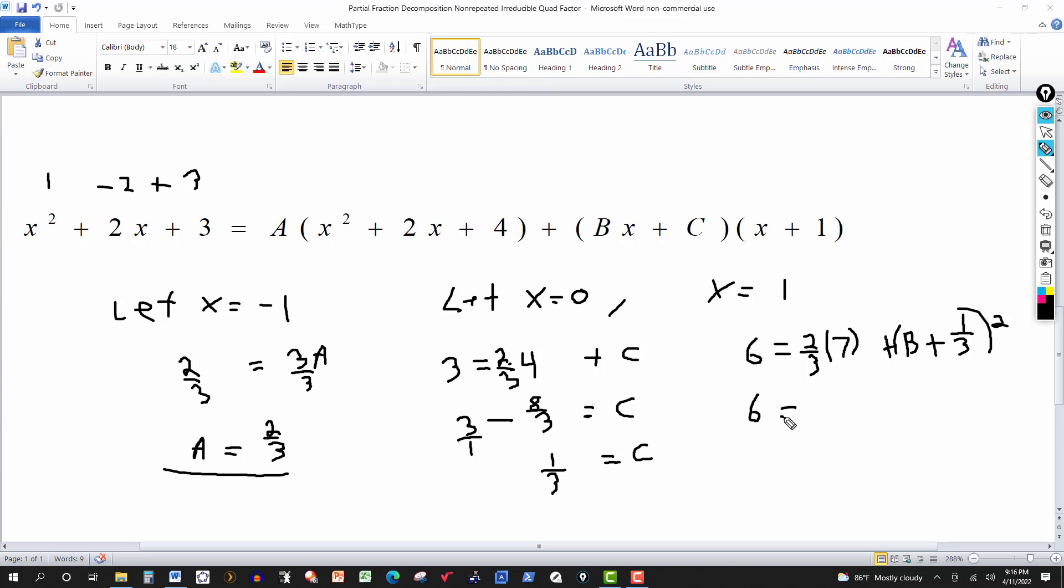So this gives me 6 is equal to. And then 2 times 7 is 14 thirds here. 2 thirds times 7 is 14 thirds. A multiplied by 2 we get 2B. And then 2 times 1 third is 2 thirds. And then we have 14 thirds and 2 thirds. So that's 16 thirds. We take that over to the other side. So this is 6 minus 16 thirds. Okay. We added 14 thirds and 2 thirds. 16 thirds. Take it over.